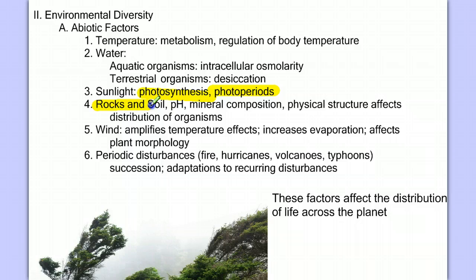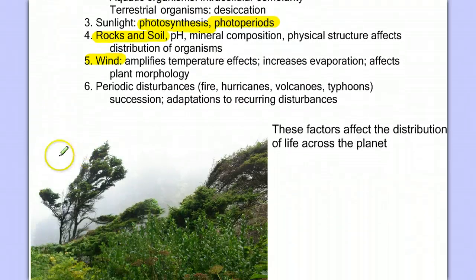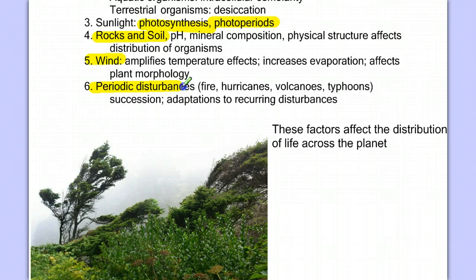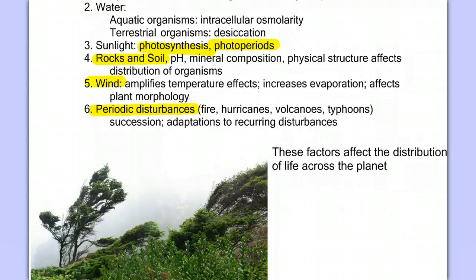Rocks and soil make up part of the abiotic factors that determine what organisms can live in a certain area. Wind is an abiotic factor that we may not think immediately affects living things, but it amplifies the effects of temperature, it increases evaporation, and it can actually change the shapes of plants. The final abiotic factors that affect the distribution and diversity of environments are periodic disturbances — fires, hurricanes, volcanoes, and typhoons — that tend to wipe out large segments of an ecosystem and set it up to re-establish with new growth and new animal and plant species in a process called succession.